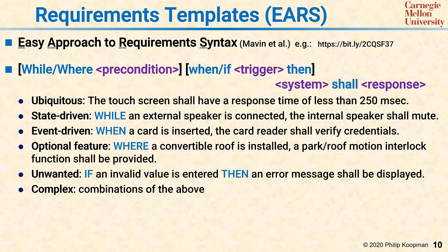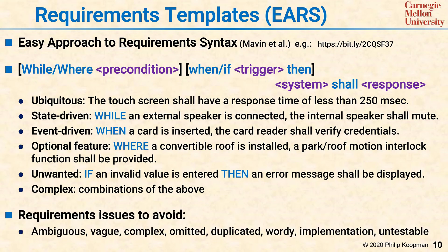To be sure, you want to boil down requirements to the simplest possible form, but sometimes things are a little more complicated than the templates above. The EARS work also has an interesting list of requirements issues — things that can be wrong with a requirement — that's worth a quick look. The attributes of requirements they found problematic are requirements that are ambiguous, vague, complex, omitted or missing, duplicated, wordy, describe an implementation, or are untestable.